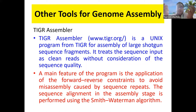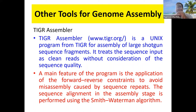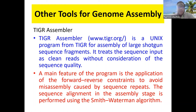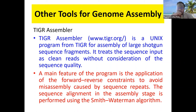If anyone has a problem doing sequencing and believes a particular organism is important, they can write to the institute. If the institute finds the request important, they will sequence the genome free of charge. The TIGR assembler is also a unique space program like the previous ones; it takes data from shotgun genome sequencing and takes clean reads as input.